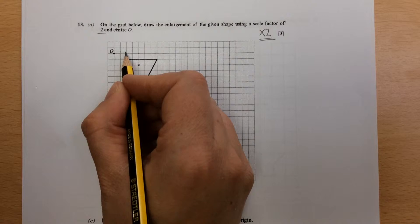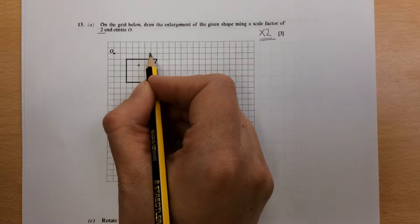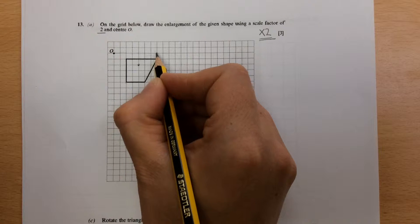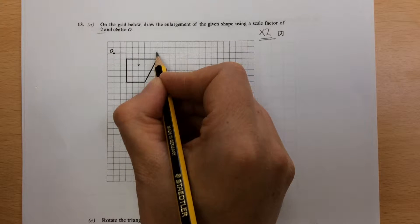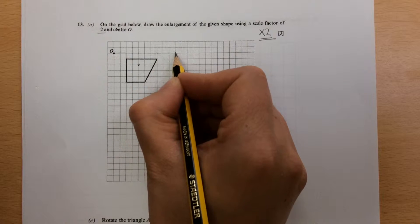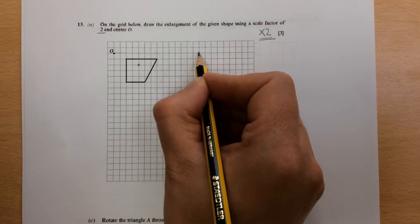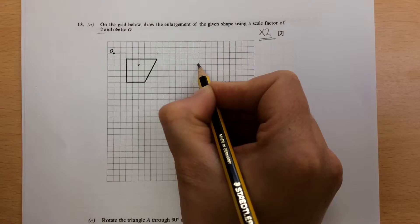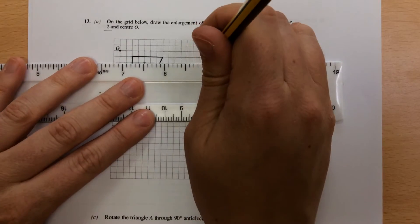This one is 1, 2, 3, 4, 5, 6, 7 across, 1 down. So 7 across is now 14. So 7, 8, 9, 10, 11, 12, 13, 14. 1 down is now 2 down. So I've got my first line.